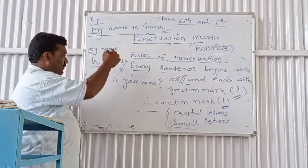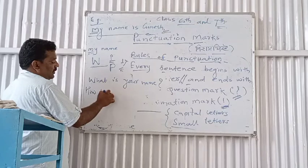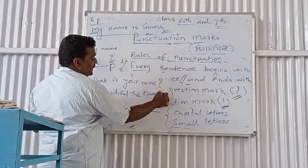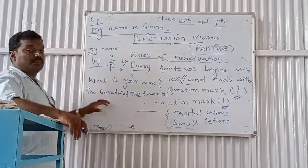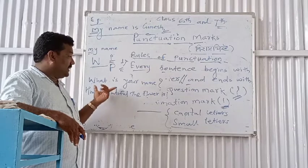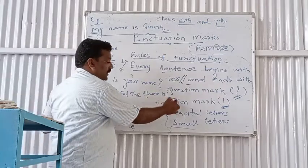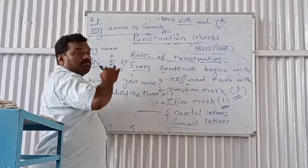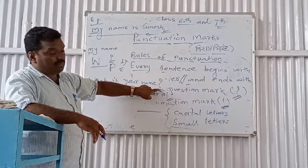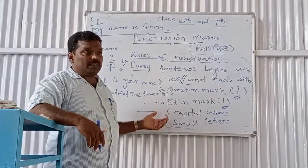One more example is of exclamation: 'How beautiful the flower is!' This sentence is not a statement and not a question — this is an exclamation. Below the exclamation mark there is also a dot. We will see the next part in our next video.